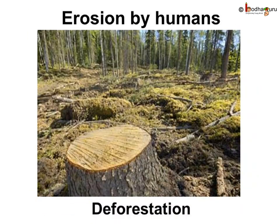Soil erosion is also caused by human action. One such action is cutting down of trees, which is called deforestation. The roots of the plants hold the soil, so when that protection is removed, the soil gets easily eroded by wind or water.